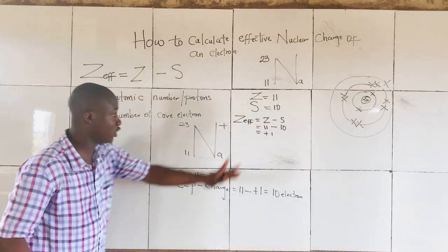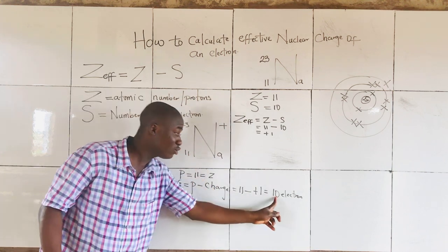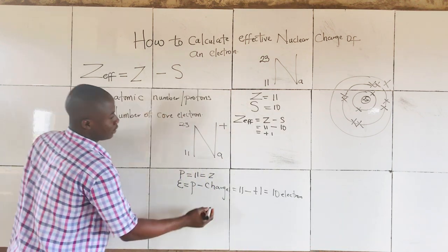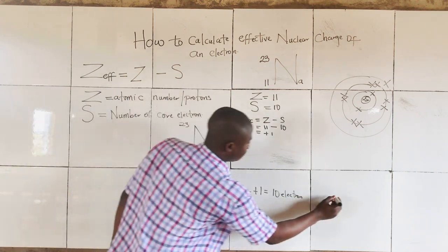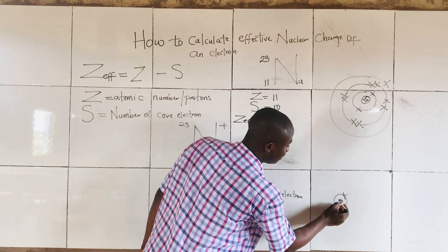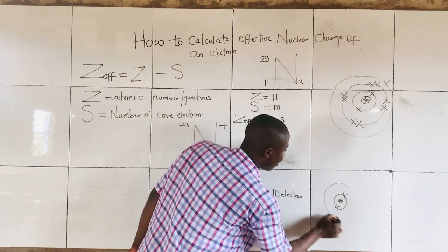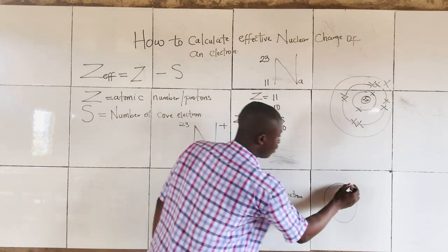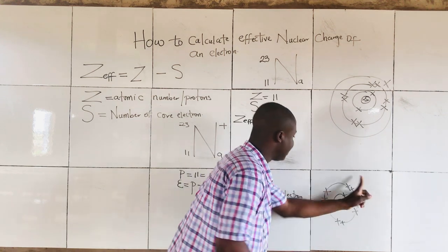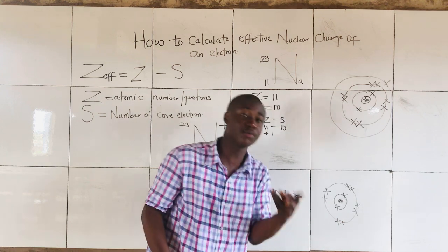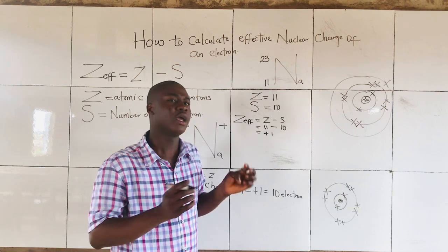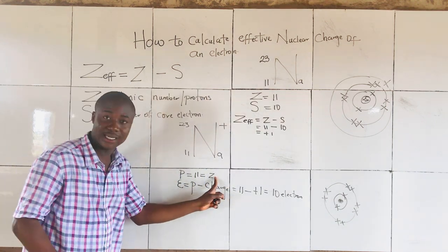Now let's draw the shell notation for sodium ion. It's the electron number that determines how many electrons will be drawn. The nucleus has a first energy level (K shell) with 2 electrons. Our aim is to get 10 electrons total. The second shell carries a maximum of 8 electrons, so 8 plus 2 gives us 10 electrons. The value for Z remains 11.